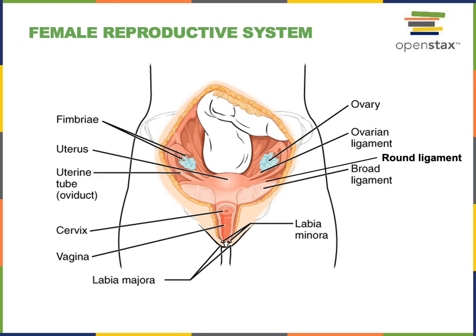The uterus is stabilized by several ligaments. The broad ligament is an extension of the peritoneal membrane into the pelvic cavity, draping along the superior surfaces of the uterus, the uterine tubes, and surrounding the ovaries. The round ligaments extend anteriorly, traveling through the pelvic cavity to the inguinal canal — the same pathway as the ductus deferens in males — anchoring the uterus to the anterior wall of the pelvis.